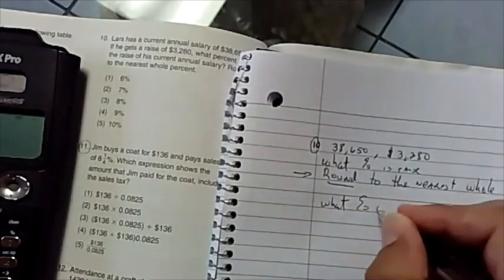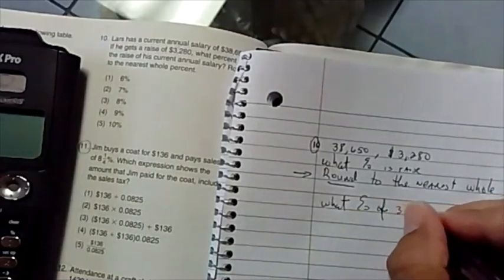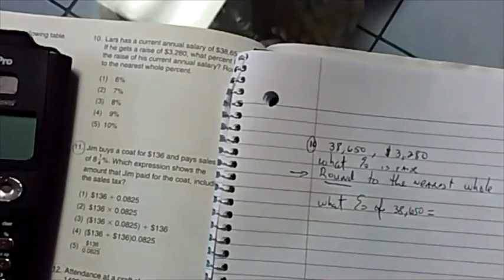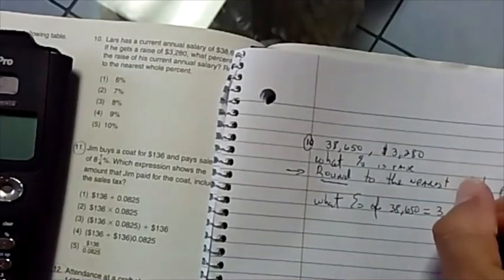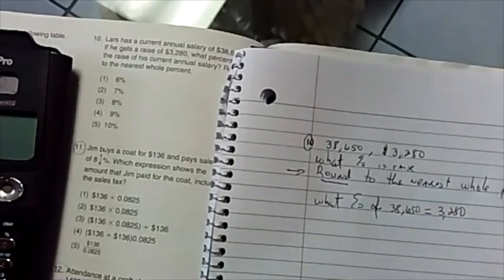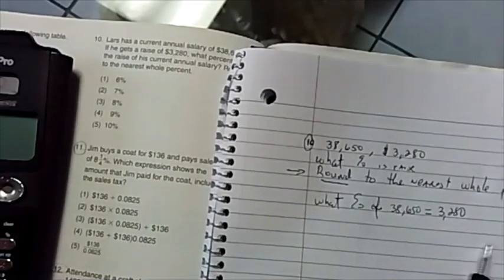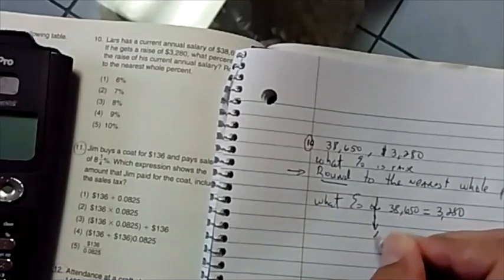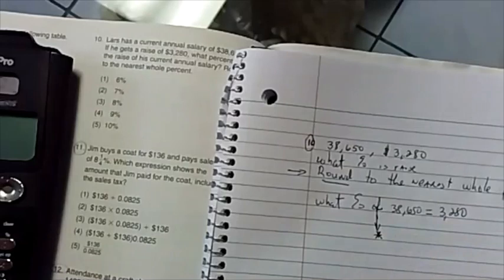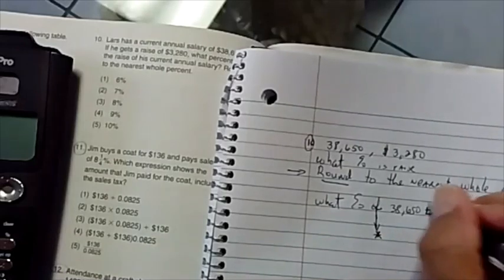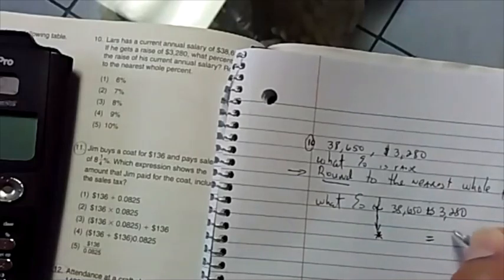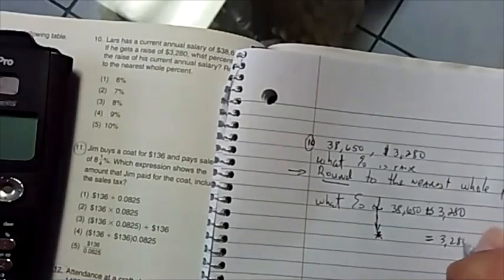What percent of 38,650 is, which is another word for equal sign, 3,280. If you write it out like this, what percent of, look what happens. I can replace this with a times because of means times. This should be the word is, I cheated. Is is equal sign. I bring down the two numbers.